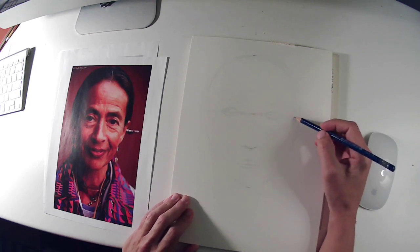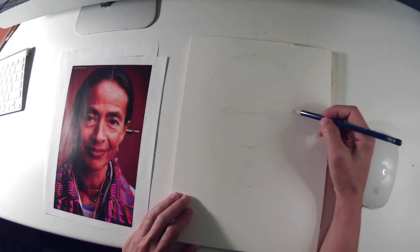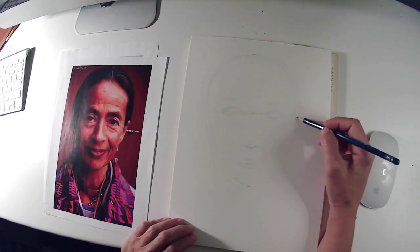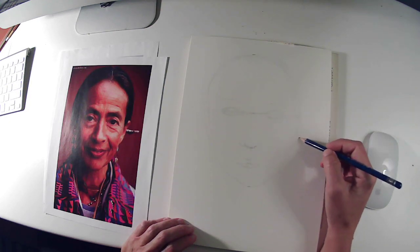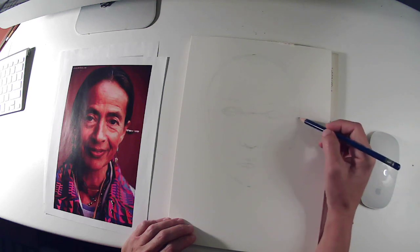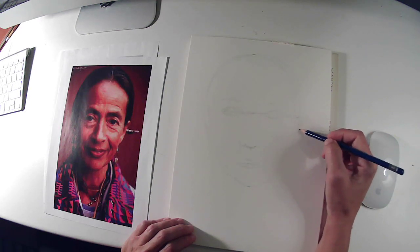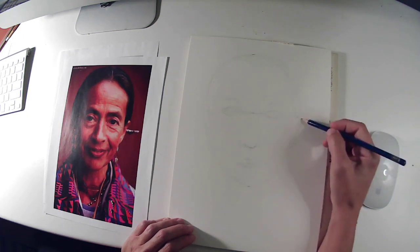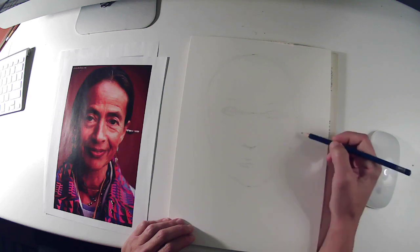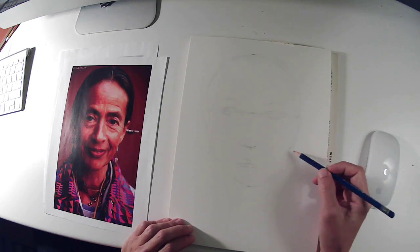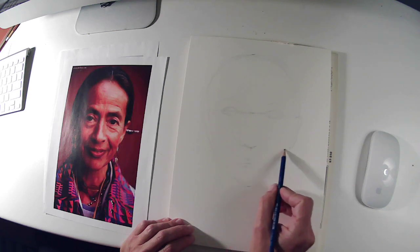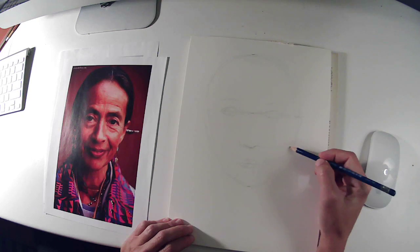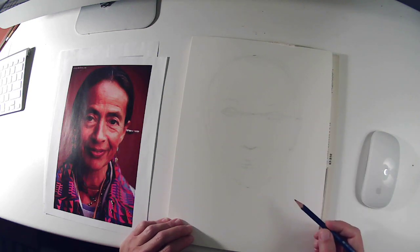A couple more things I can add before being more specific: the position of the ears will fit between the eye and the bottom of the nose. So if I draw my ear to fit between this point and this point, that's going to be the length and position of my ear. If I carry that line across, I'm going to have the width of my ear placed. I would do that same thing for the ear on the left side as well.